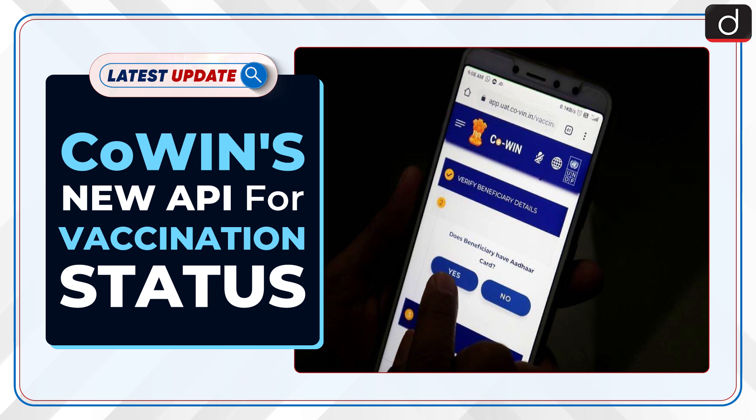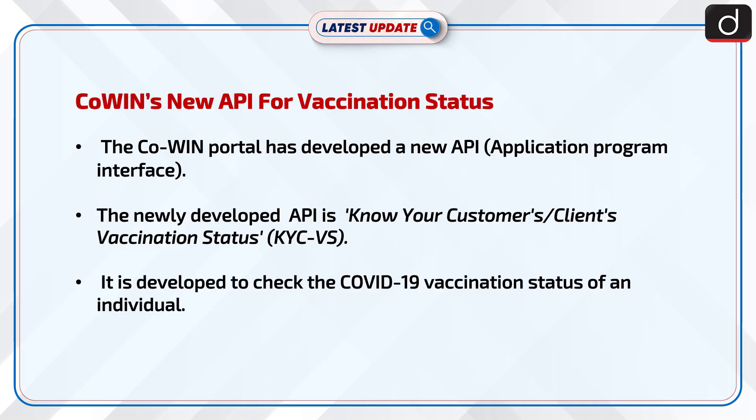Welcome to the latest update program of TIS. In this series, the topic of discussion is Kowin's new API for vaccination status. The Kowin portal has developed a new API, Application Program Interface, called Know Your Customer's Vaccination Status, or KYCVS. It is developed to check the COVID-19 vaccination status of an individual.